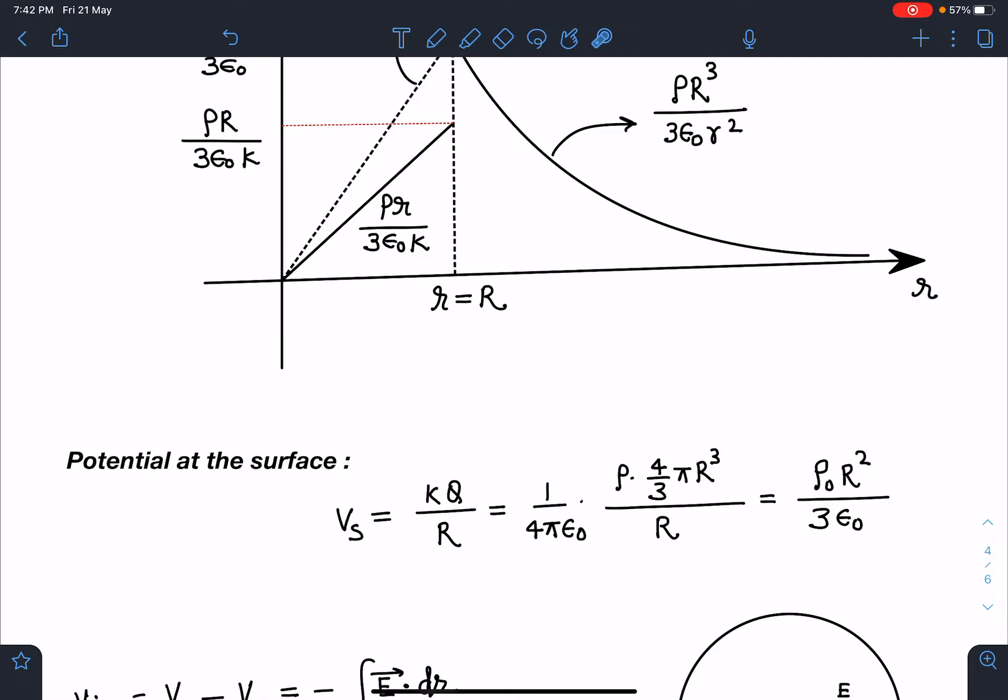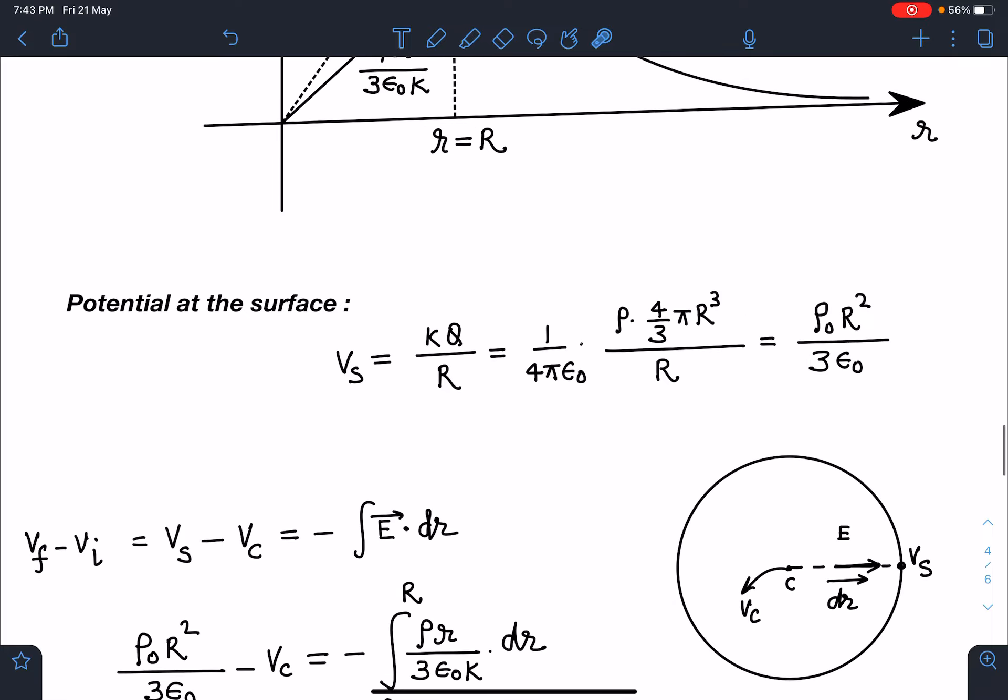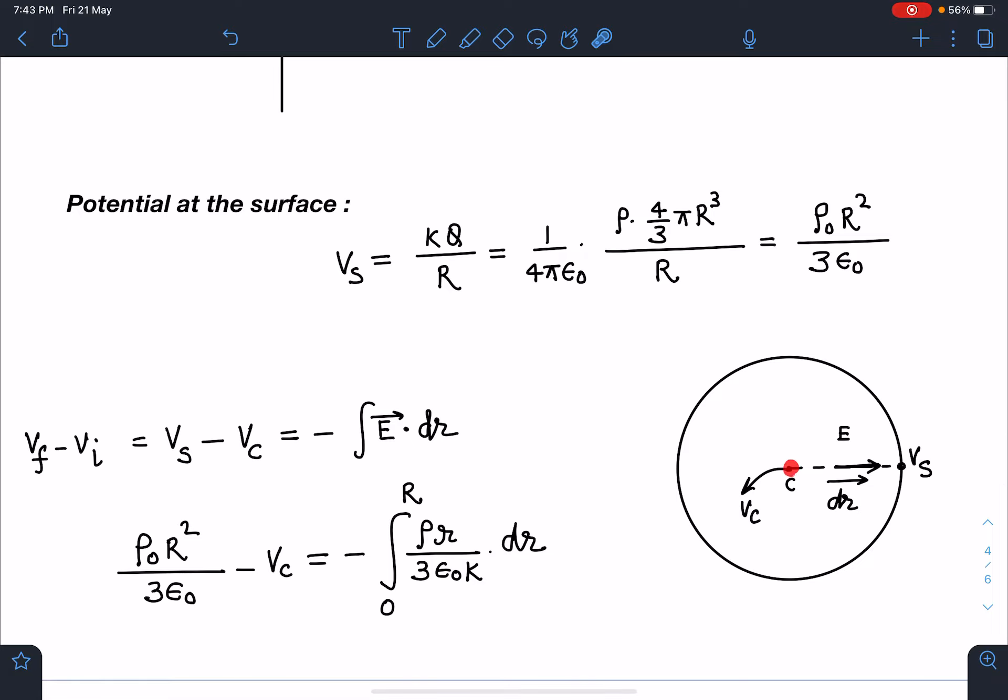And for k equal to 1 we know potential at the center is 3 by 2 times potential at surface. So in the end whatever result we will get in terms of k we are going to substitute k equal to 1 and we will verify this fact that ratio is 3 by 2 between center and the surface. So now I can move from point C to the surface. I know the potential at the surface, I know the field here. So I can use this famous equation V final minus V initial is equal to minus integral E dot dr.